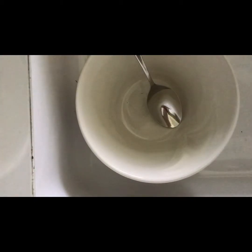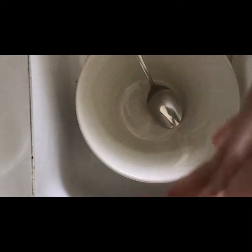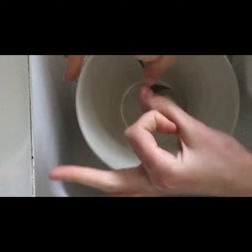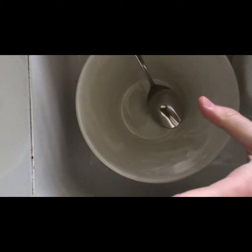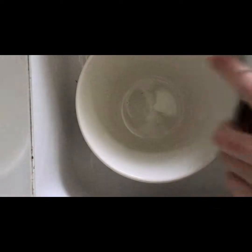First you add glue. However much glue you add determines however much slime you're going to make. If you add a little tiny bit of glue then you're going to have a little tiny bit of slime. If you add loads of glue then you're going to have loads of slime.